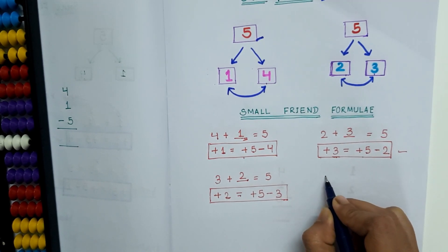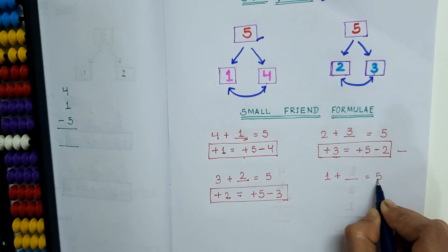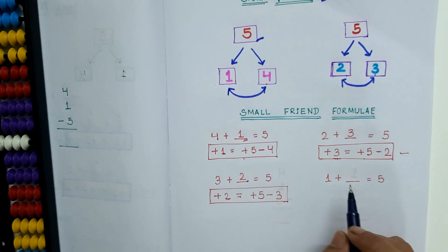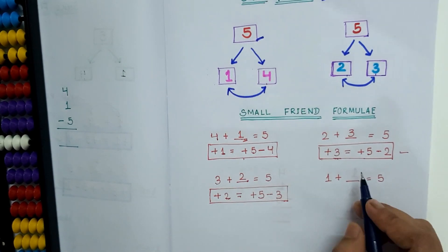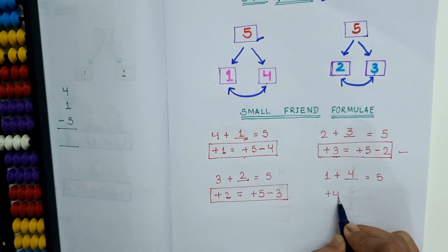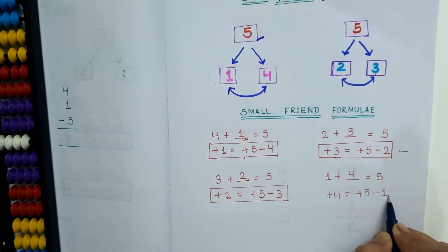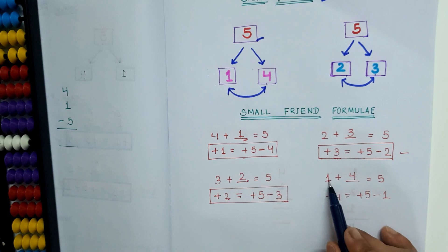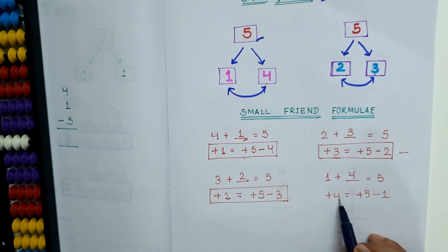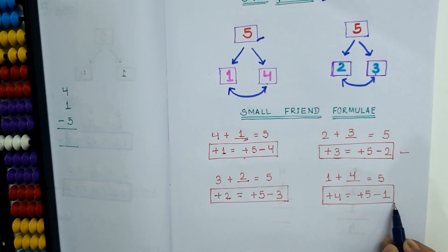The next one: 1 plus how much equals to 5? We know that 1 plus 4 equals to 5. So plus 4 equals to plus 5 minus 1. If we subtract 1 from 5, we will get the answer 4. So here we have the fourth small friend formula: plus 4 equals to plus 5 minus 1.